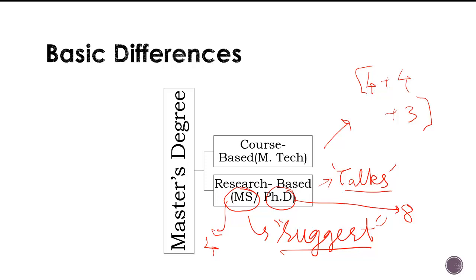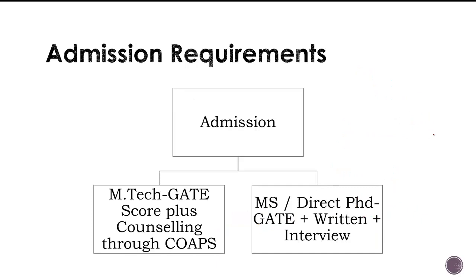So basically what happens is, the M.Tech people, they do these courses and they sit for placements, they prefer to mostly go to industrial kind of jobs, whereas the research based, we will come to that in the upcoming slides. So these are the basic differences, when it comes to a course based degree like M.Tech, it's more of courses. When it comes to a research based degree, the course work is very less and there are many relaxed sections but you have to equally work upon the research work which you are doing.